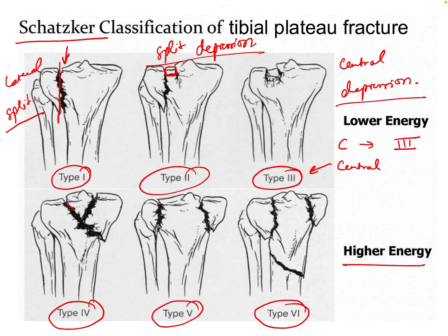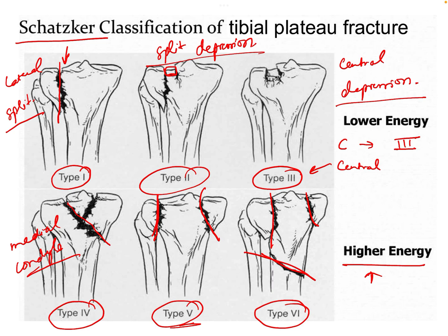In Type 4 we have a medial condyle fracture. In Type 5 we have a bicondylar fracture, where both the lateral and medial condyles are fractured. In Type 6, which represents the highest energy trauma, we have a bicondylar fracture along with dissociation at the metaphysis and diaphysis level. This is the most commonly and famously used classification for tibial plateau fractures.